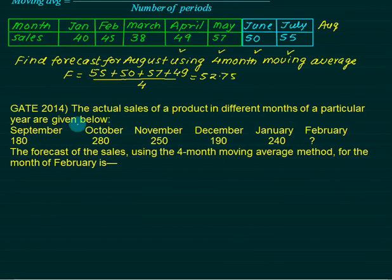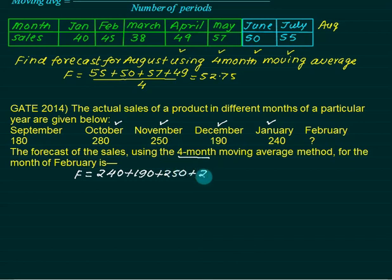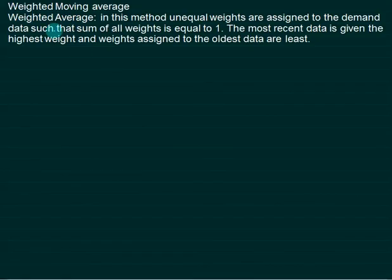There is a GATE numerical example: actual sales for different months of a year — October: 280, November: 250, December: 190, January: 240 — and we want to calculate the sales forecast for February using a four-month moving average. Taking the four most recent months: January (240) + December (190) + November (250) + October (280) = 960, divided by 4. This gives the forecast for February. Now let's discuss the weighted moving average.